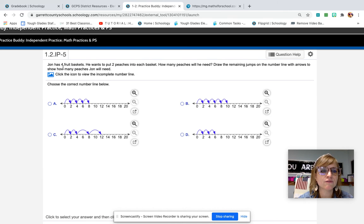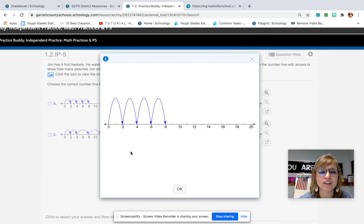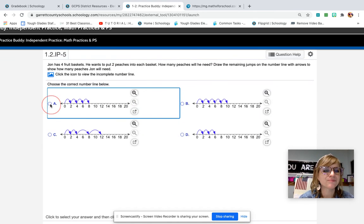So let's check out A. Four fruit baskets. One, two, three, four. Four jumps. Are there two in between here? Are they counting by twos? Two, four, six, eight. Ding, ding, ding. That's the one. That is the answer. Look at this. It shows four jumps of two. That's exactly what we wanted. So now it's your turn.